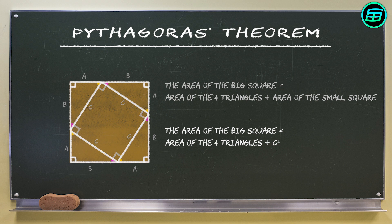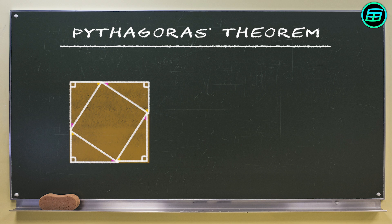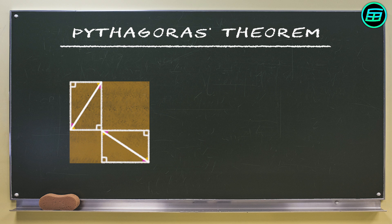If we rearrange the right triangles like this, we get a different shape without changing the area of the big square. We get two small squares with sides A and B inside the big square.